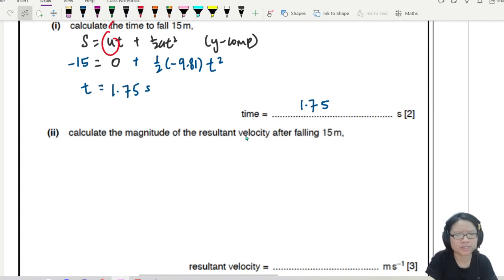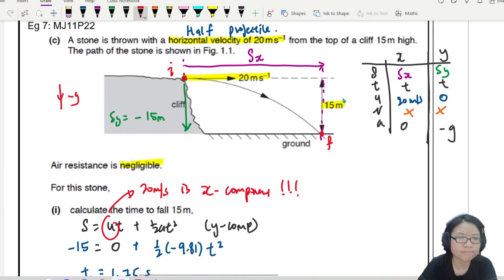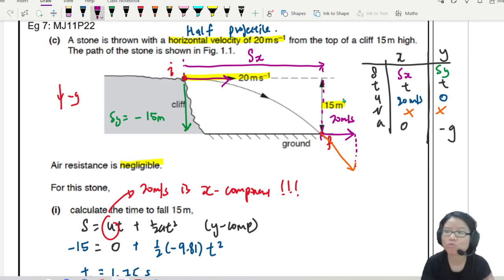Next. Calculate the magnitude of the resultant velocity after falling 15 meter. Let's look at this ball. After falling 15 meter, if I draw a vector component to represent the velocity, the vector component would be maybe something like this. So you have your horizontal velocity, which is the same. This 20 meter per second, by the time you reach here, it's still 20 meter per second. Because horizontal, no change.